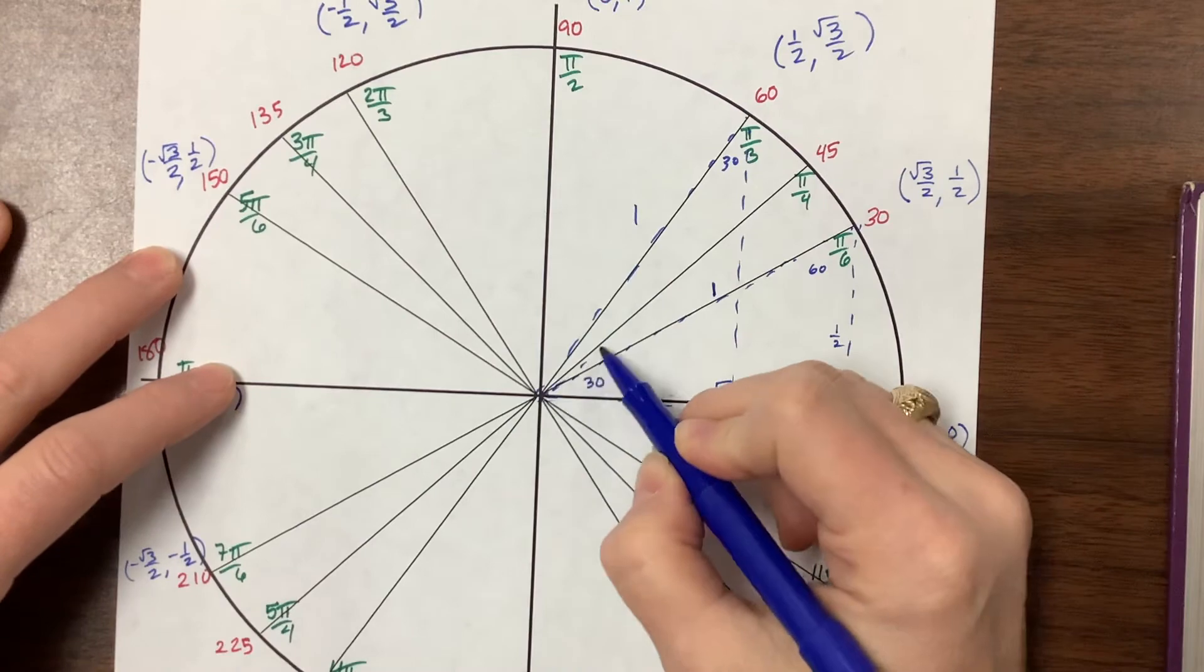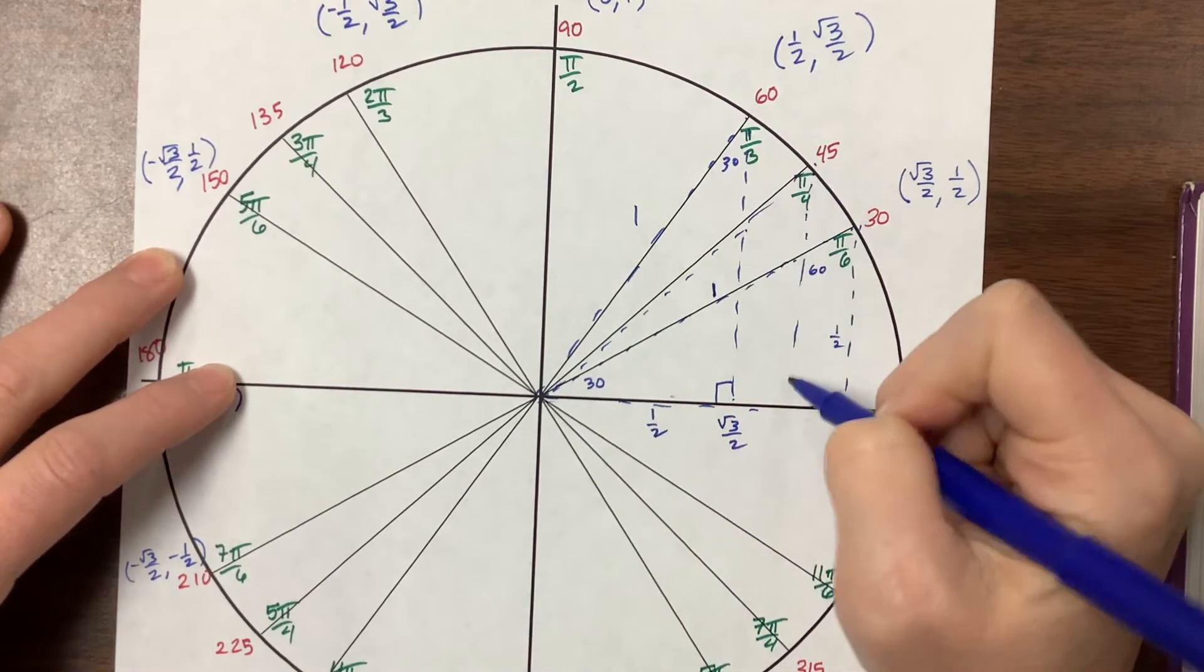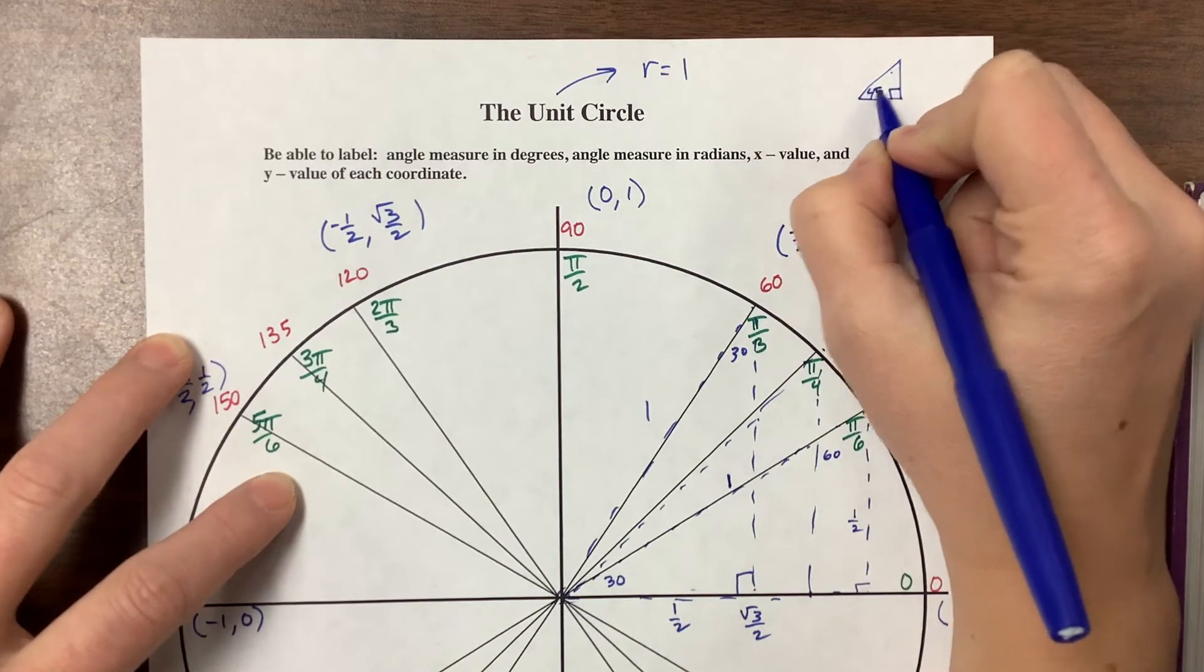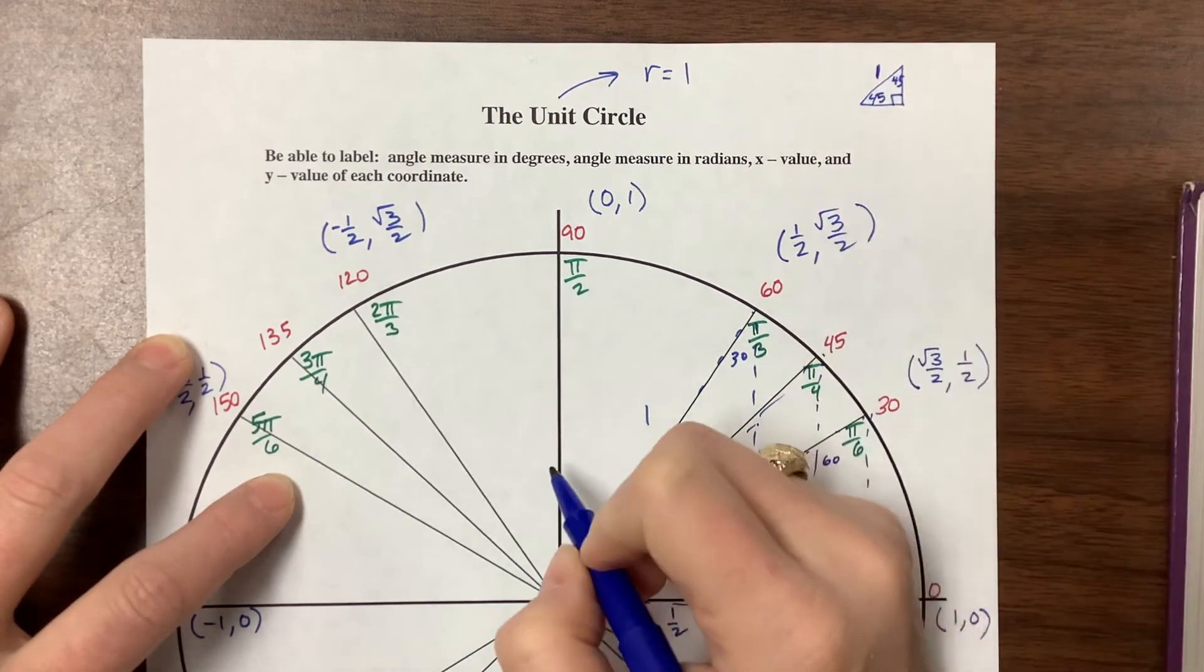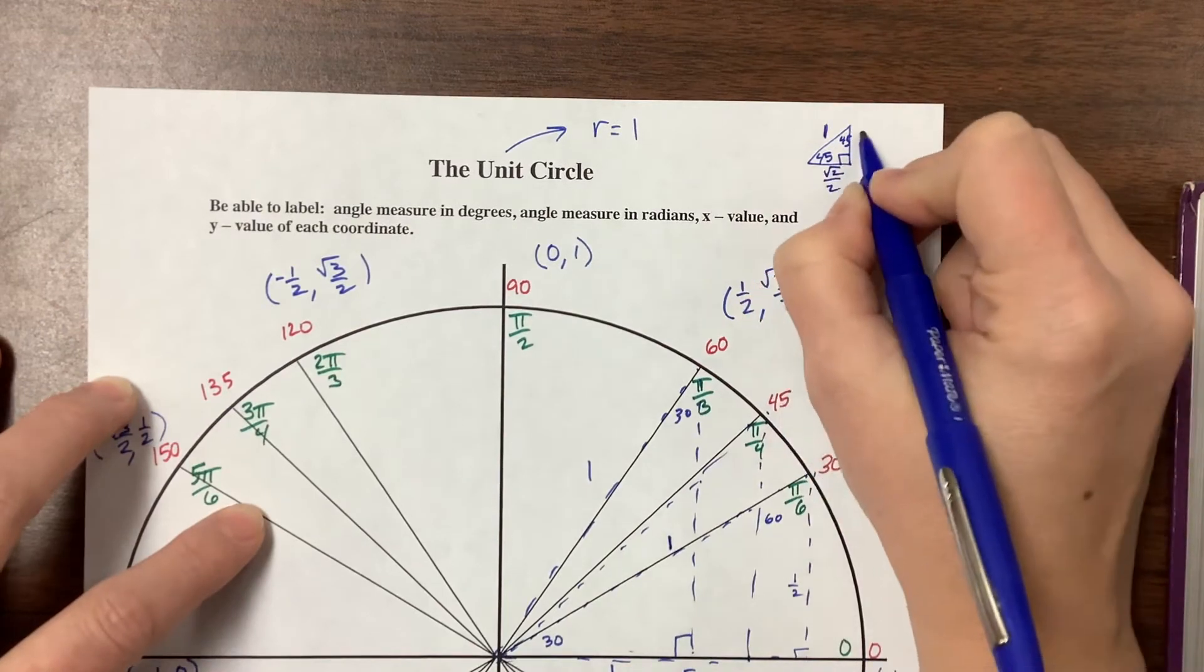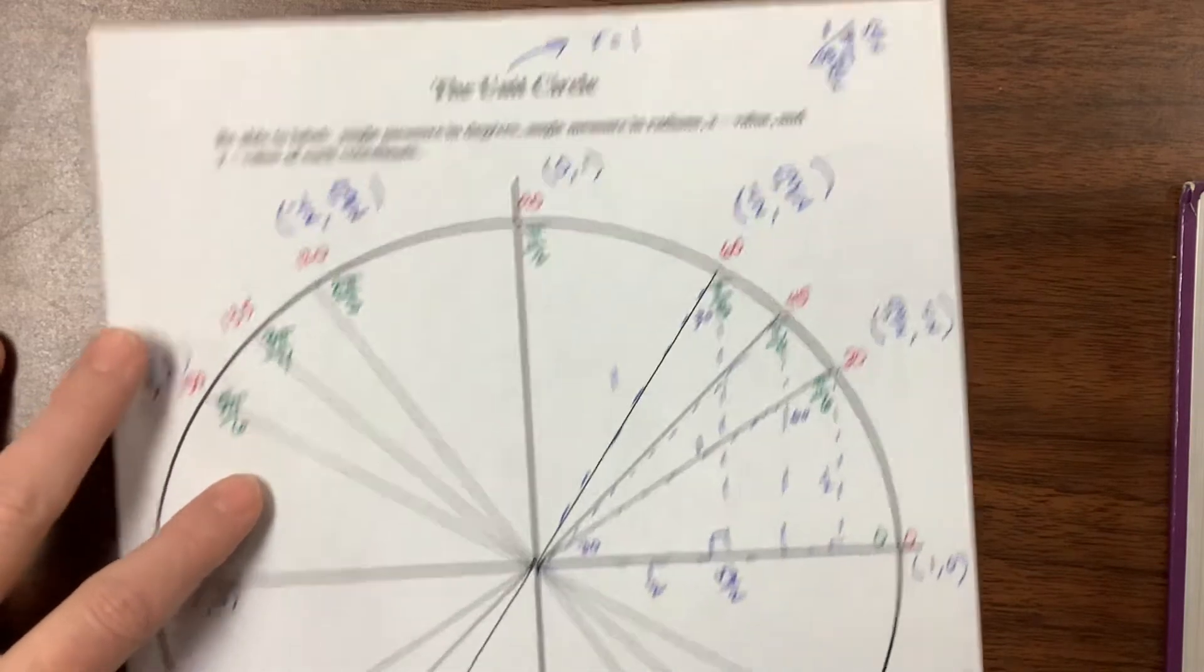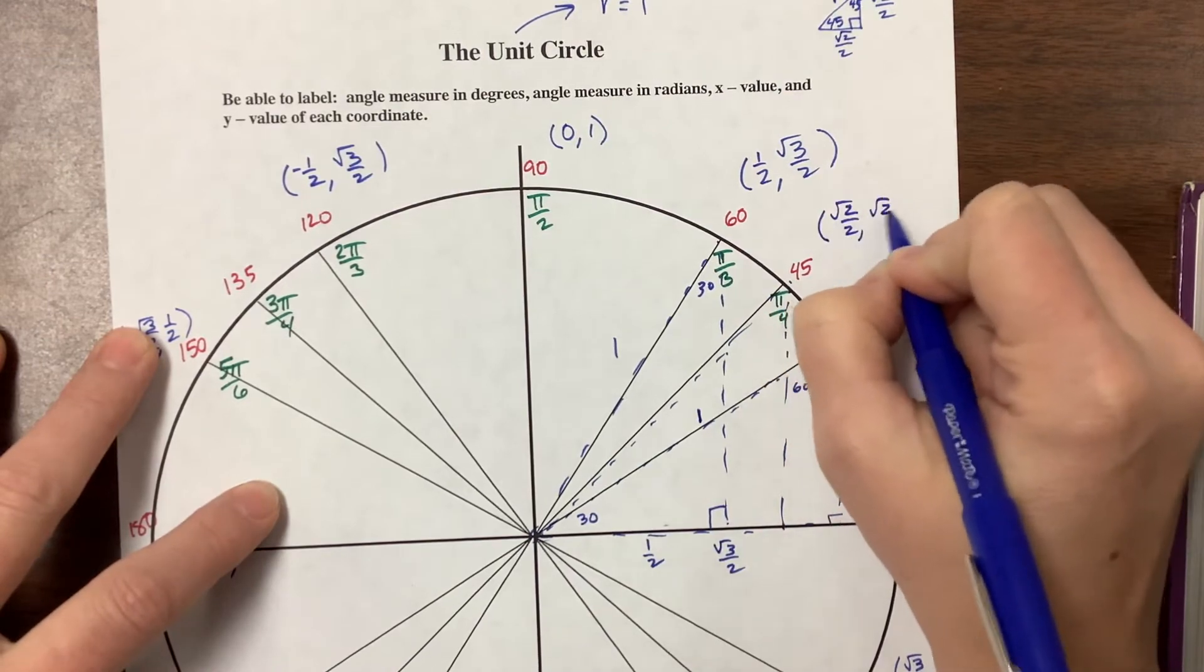Then the π/4 family is this triangle, which is a 45-45-90 triangle. If that's 1, which means that these are both root 2 over 2, root 2 over 2. We do tend to rationalize our denominators when looking at the unit circle. So the coordinates here are (root 2 over 2, root 2 over 2).